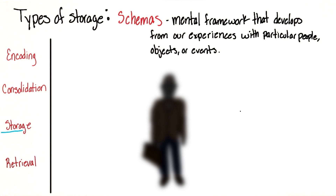So it may be that someone's schema for a professor is that they're old, they wear sports jackets with patches in the elbows, they have glasses, they carry a briefcase, they're male, and other identifying features of a professor.